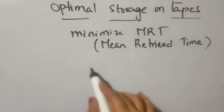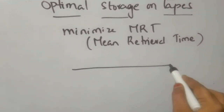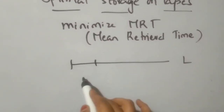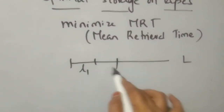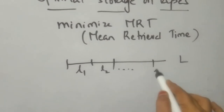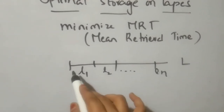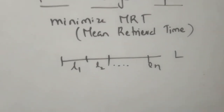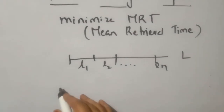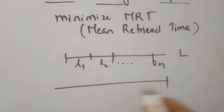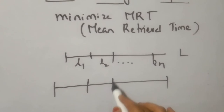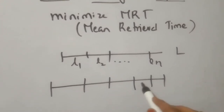In this problem, we have a tape of length L. Each program has an associated length. So this is the first program length, second program length, and so on up to the nth program. For example, if you have 5 programs — first, second, third, fourth, fifth.